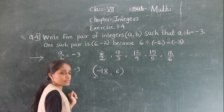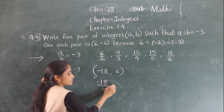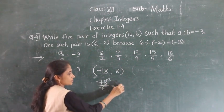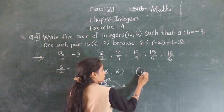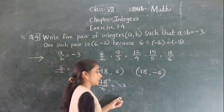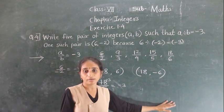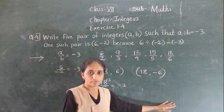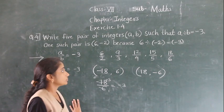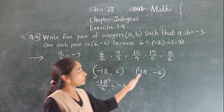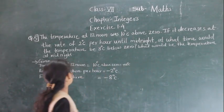This way you are going to get the same answer, minus 3. So this way you can find pairs of integers such that A divided by B equals minus 3. Everyone understood this question? Definitely you can find the pair of integers.